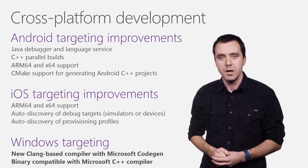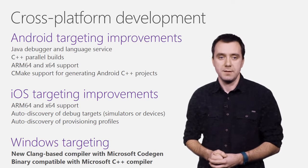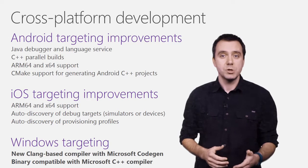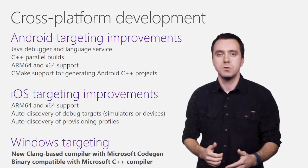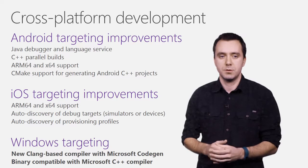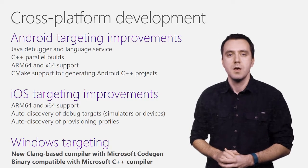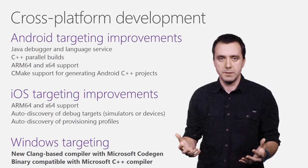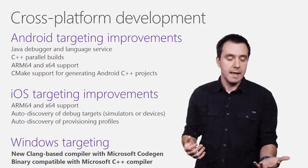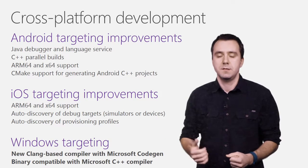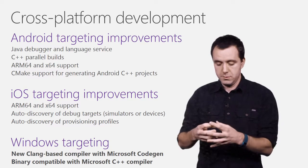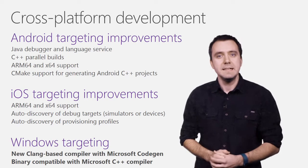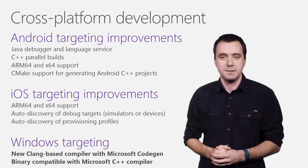With Update 1, we're also announcing the availability of a Windows toolchain based on Clang. Many of you are already using Clang to compile your cross-platform code in Android and iOS. This new toolchain will enable you to use a single compiler to compile your cross-platform code across all three platforms. This toolchain is specifically designed to allow interop with the Microsoft C++ compiler, thus allowing you to build the cross-platform portion of your app using Clang and your Windows-specific code using the Visual C++ compiler, and then bring those two binaries together into a single Windows app. You can even statically link compiled libraries built with different compilers into a single binary.